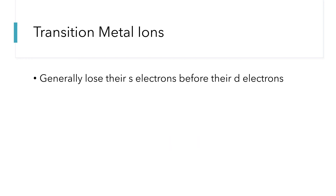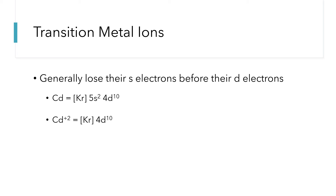When transition metals form ions, something a little different happens. Generally speaking, they are going to lose their highest numbered S electrons before they start losing their D electrons. As an example, cadmium has an electron configuration of krypton, 5s2, 4d10. If we simply reversed the filling order, we would lose the 4d electrons first, but that's not what happens. We lose the electrons in the highest numbered shell — the fifth shell — so those 5s2 electrons go first. When cadmium forms its plus two ion, the stable ion for cadmium, we end up with krypton, 4d10.